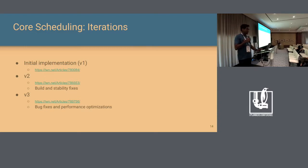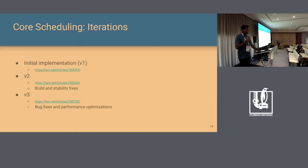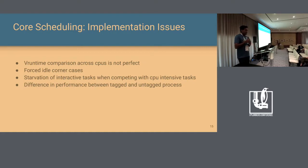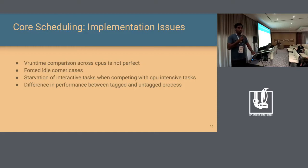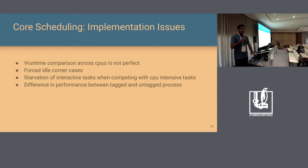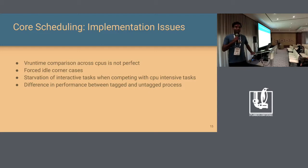There have been three iterations so far. V3 is the one currently being discussed on the list. V2 was mainly about fixing build and stability issues, and V3 was about fixing the core logic bugs from V2. One current issue is that since we now have core-wide scheduling knowledge, we need to compare priorities of processes across multiple CPUs in the same core. For the fair scheduling class, we use vruntime to compare priorities, but vruntime is not designed for cross-CPU comparison. V1 was blindly comparing vruntime, which led to starvation issues.